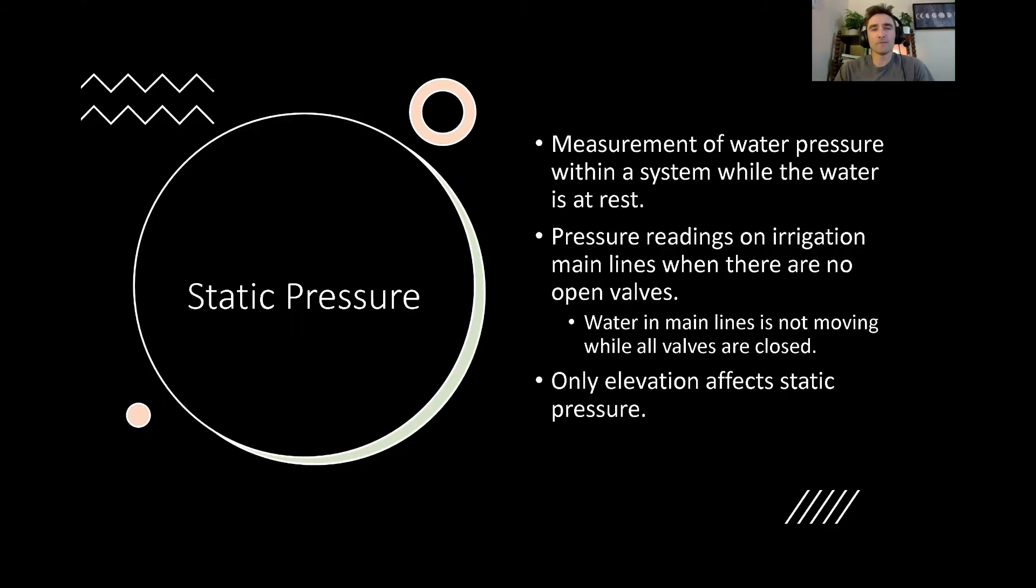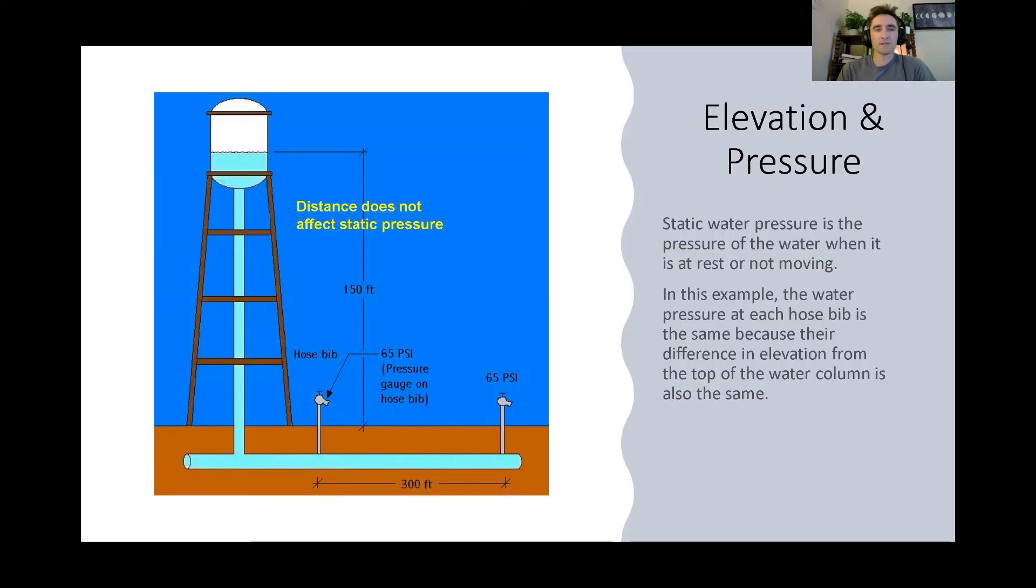Everything that we've been measuring so far is known as static pressure, meaning this is the measurement of water pressure within a system while the water is not moving, while the water is at rest. When we take pressure readings and the water is not moving, the only influence of change in water pressure will be elevation. That's the only thing that's going to have an impact. Now, when we talk about static water pressure, one thing that kind of may not make sense, it's not intuitive, is that the distance has no effect. The only thing that changes your pressure is your elevation.